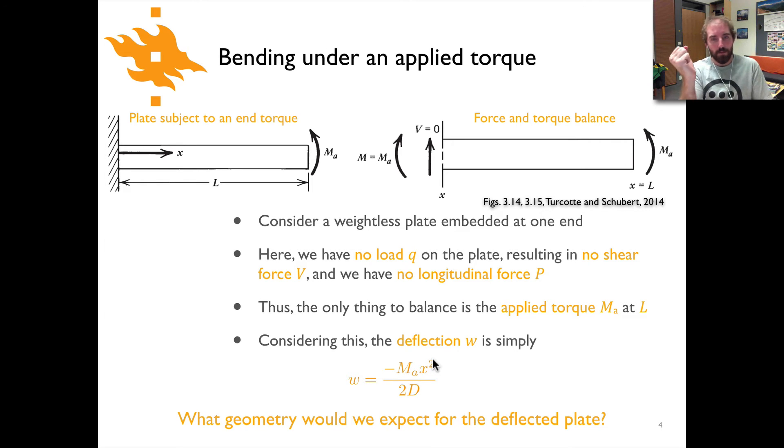So in this case, we would expect that by applying a torque at the end of our beam, we should get something—if I took my ruler and did the same thing—that looks kind of like a parabola or half of a parabola, with the free end being turned up and the fixed end stuck into the wall in this case.